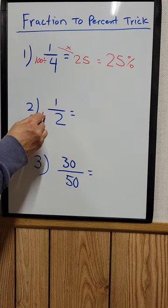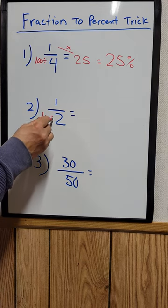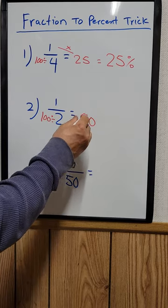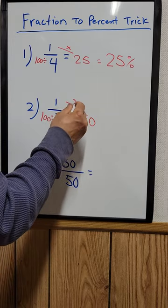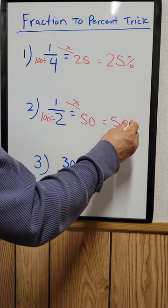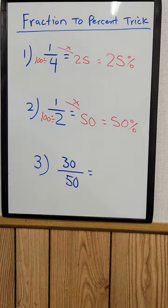One-half. Just take 100 divided by 2, which equals 50, and then 50 times 1 equals 50. Just add the percentage sign at the end there: 50%.